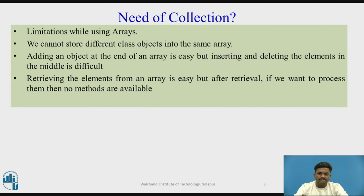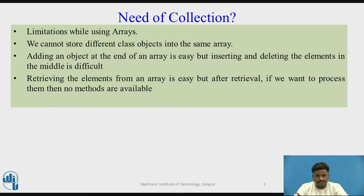What limitations do we have in arrays? First, we cannot store different class objects into the same array. For example, if you want to store integer, float, and double data types into a single array, it is not possible. Likewise, if there is an employee object and a student object belonging to different categories, and you want to store them in a single array type, it is not possible.